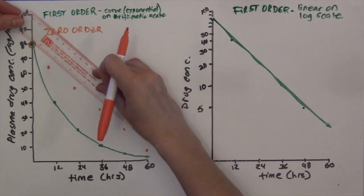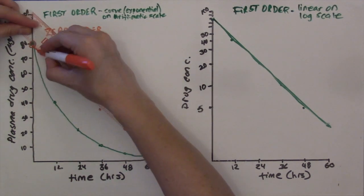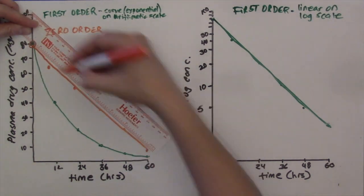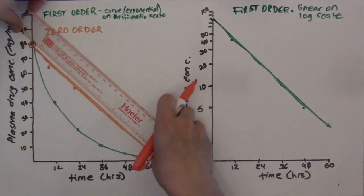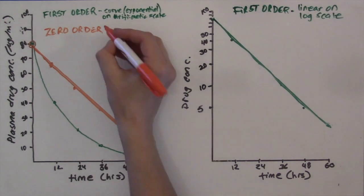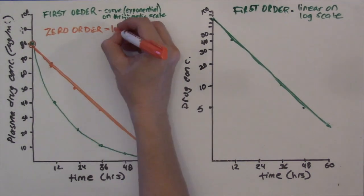So when plotted on an arithmetic scale, the relationship between concentration and time is linear.